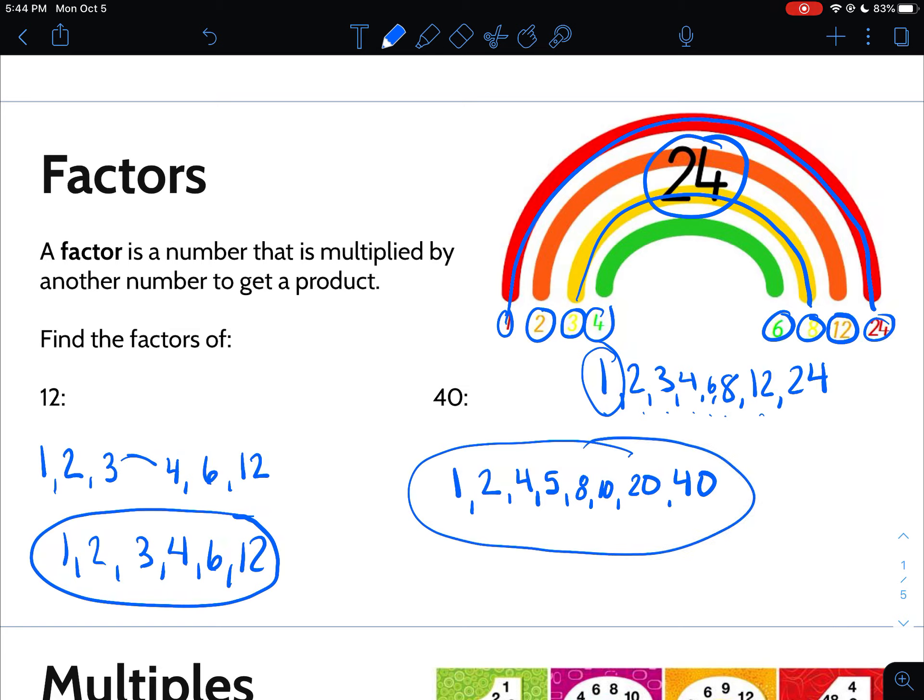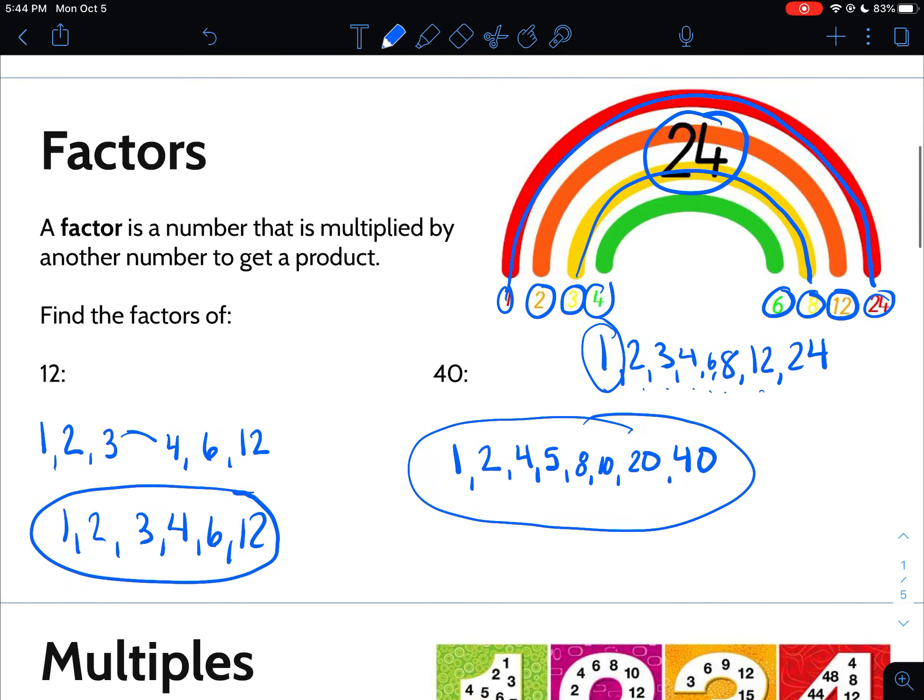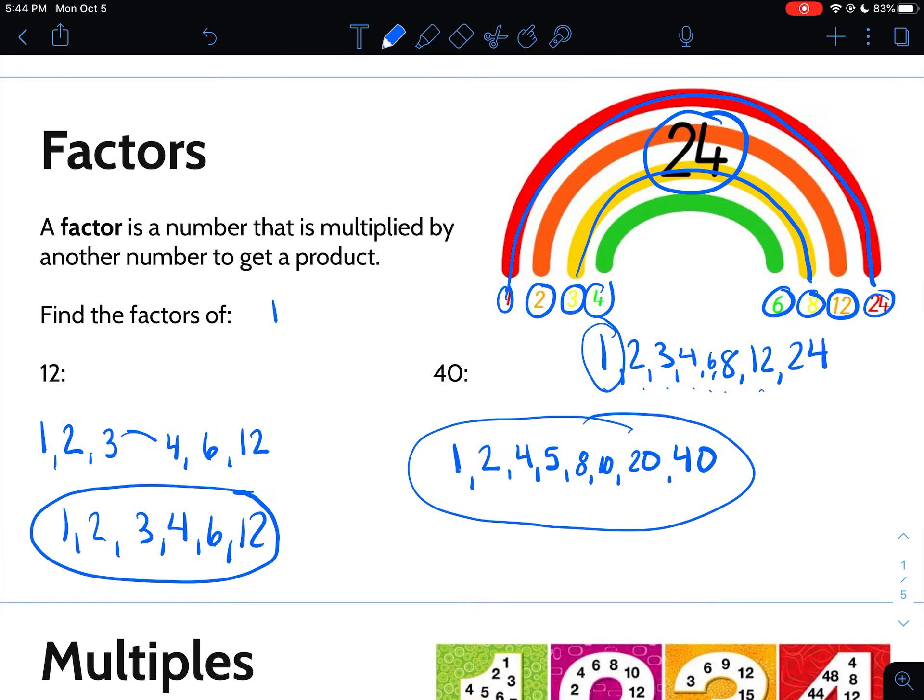One tip that you should remember is that factors are always smaller or equal to the given number. Notice all of the factors of 40 are 40 or smaller. Factors are always going to be smaller.